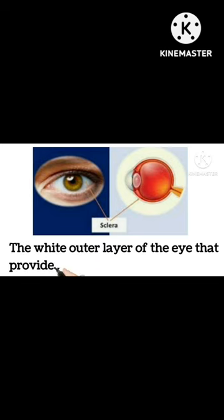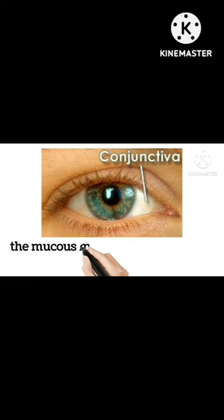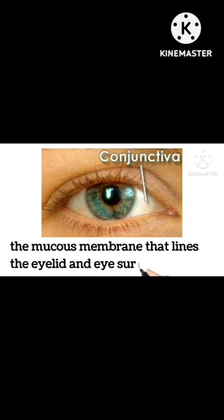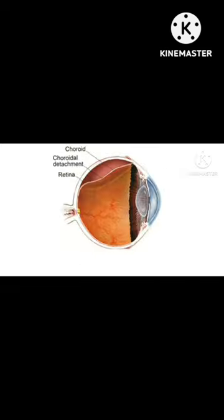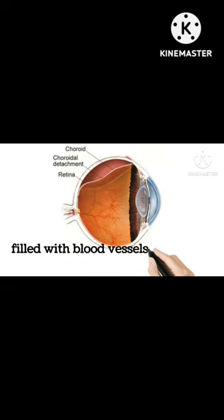The conjunctiva is the thin transparent layer of tissue that covers the front of the eye and the inside of the eyelids. The conjunctiva is the mucous membrane that lines the eyelid and eye surface. The choroid is the layer of tissue between the retina and the sclera.